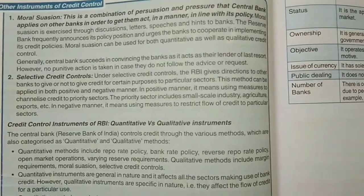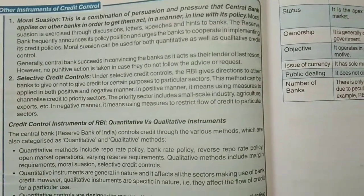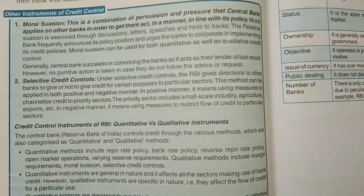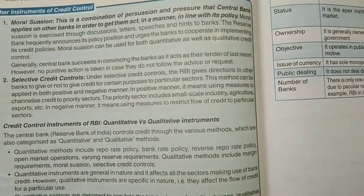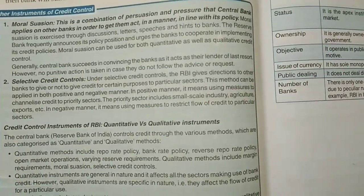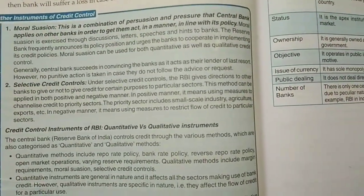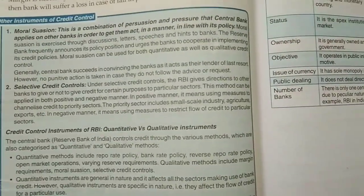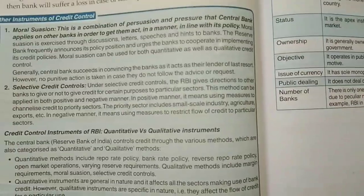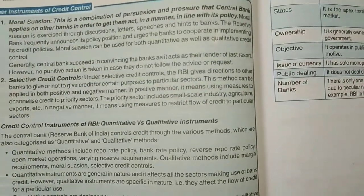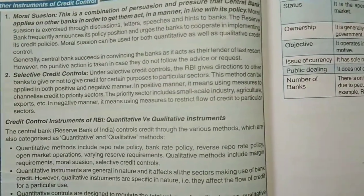Moral suasion can be used both as quantitative as well as qualitative credit control. Generally, the central bank succeeds in convincing the banks as it acts as their lender of last resort. However, no punitive action is taken in case banks do not follow the advice or request. So moral suasion is a kind of moral persuasion where the central bank persuades or puts pressure on commercial banks to act as per its policy, done through letters, speeches, or discussions.